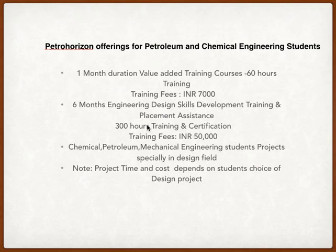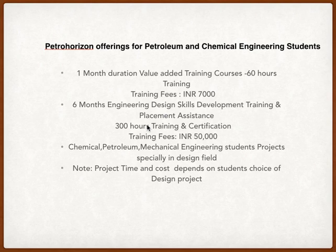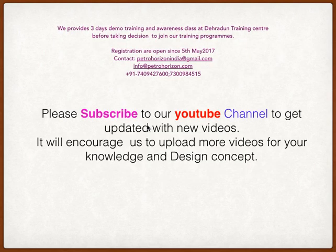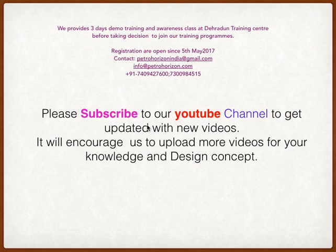PetroHorizon offers training for petroleum and chemical engineering students. We provide one-month value-added training courses, six-month engineering design skill development training and placement assistance courses, and project design work assistance for chemical, petroleum, and mechanical engineers for third and final year students. Project cost and time depends on the student's choice of design project. We provide three-day demo training and awareness classes at our training center before you decide to join. Registrations are open since 5th May 2017. You can contact us at the email address and phone number mentioned here.